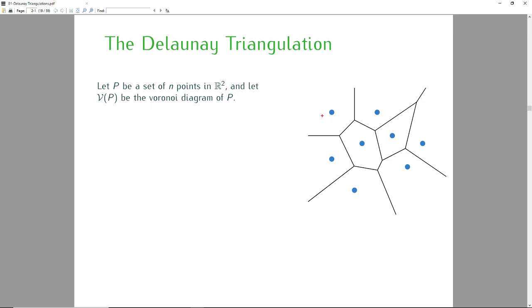So in this picture, all the points inside this cell have this site as its closest point. If I pick any point in the region, the closest neighbor of a set of blue points is that point.